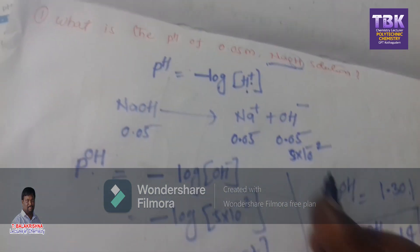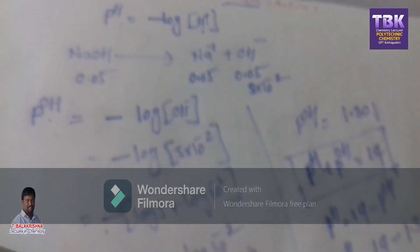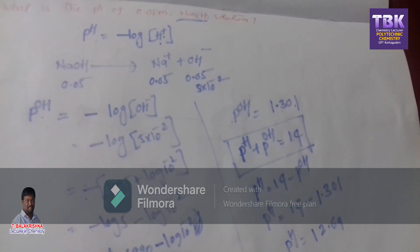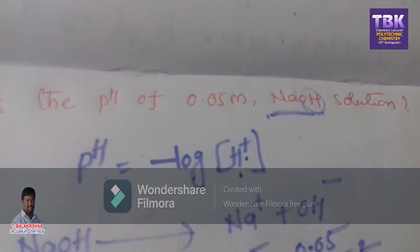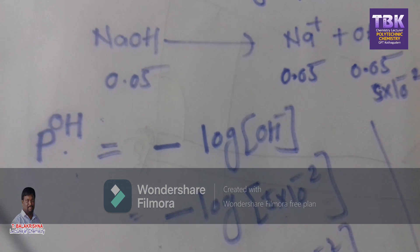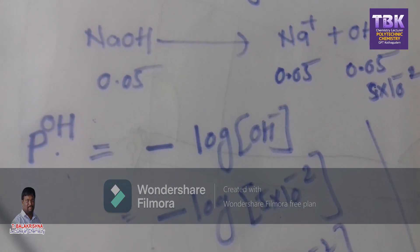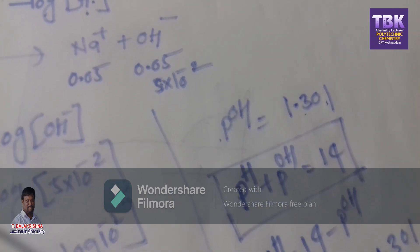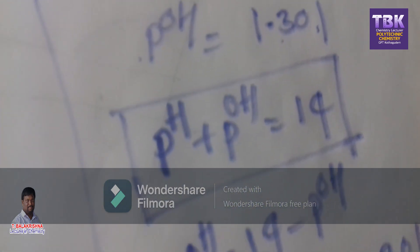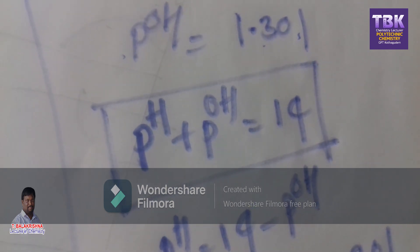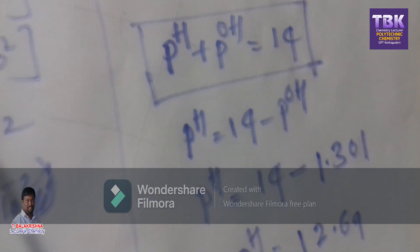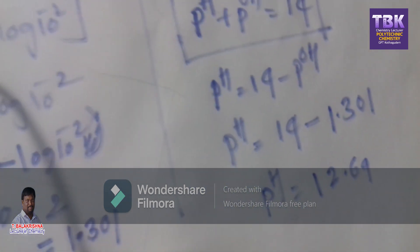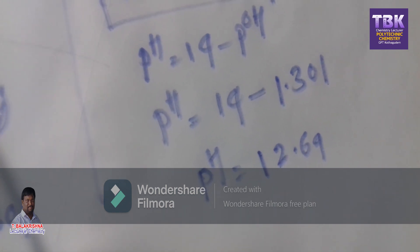The pH of 0.05 molarity sodium hydroxide solution is 12.69. Confirming: pH + pOH = 14, so pH = 14 minus pOH, and substituting gives 12.69.